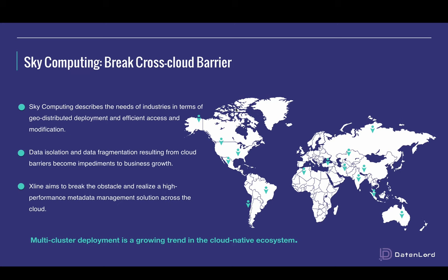For example, migrating a container is pulling an image — it takes a while. But migrating a serverless function is faster; we just need to upload a piece of code. However, compared to computing, data moving is not that easy, especially considering data consistency. Cross-cloud data access usually means high latency and low throughput. With databases, it's hard to implement high-performance data consistency. Our open-source project X-Line is built to resolve these related issues, trying to bring sky computing to cloud storage.